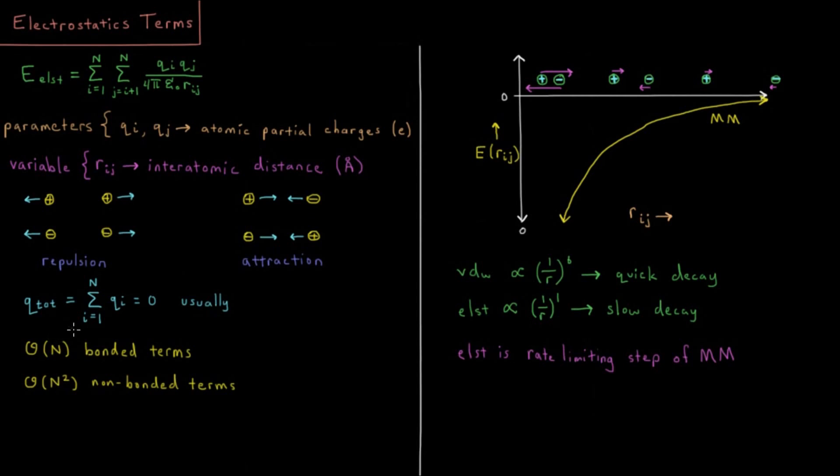Some other factors to bring up: we have the total charge of the system. Typically, we want to choose our charges such that the total charge of the system is going to be zero. Oftentimes in molecular mechanics, we usually have what are called periodic boundary conditions.